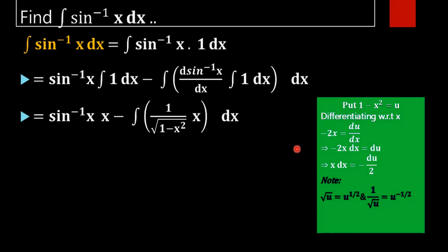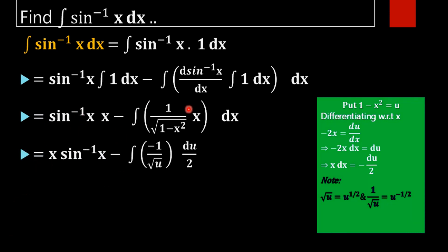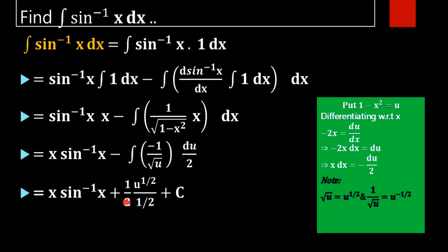By applying this substitution of u, we will get x sin inverse x minus — what is u? 1 minus x square, that is root u. Instead of 1 minus x square, we are substituting u here. Then x dx is rewritten as minus du by 2. Now this minus and this minus become plus, giving us x sin inverse x plus integral of u raised to minus half.